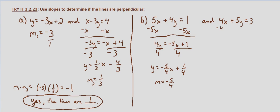With 4x plus 5y equals 3, subtract 4x from both sides. We end up with 5y equals negative 4x plus 3. Divide both sides by 5 and we get y equals negative 4 fifths x plus 3 fifths.